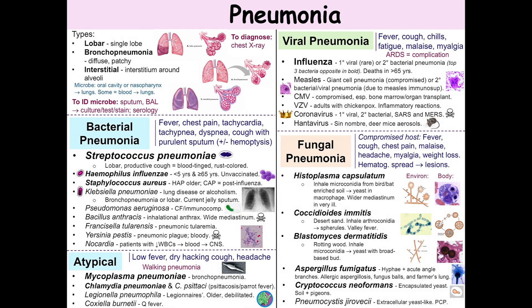Yersinia pestis has several virulence factors: F1 capsular protein, the Yops proteins, and a type 3 secretion system. Pneumonic plague has a rapid course. Symptoms include first a mucoid sputum and then a bloody sputum. This leads to cyanosis and is fatal without treatment.